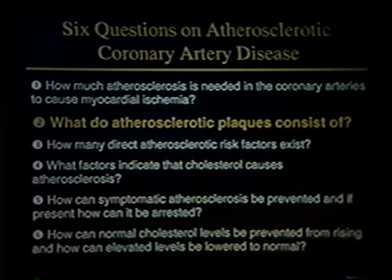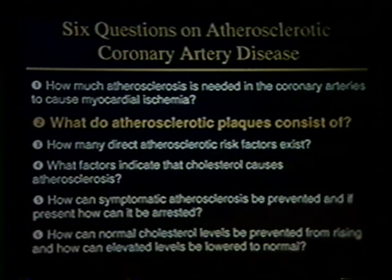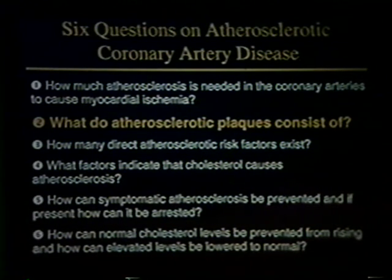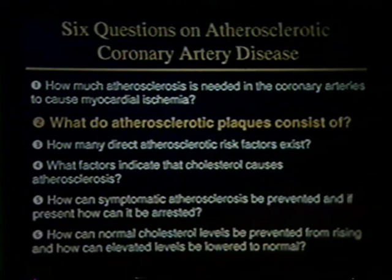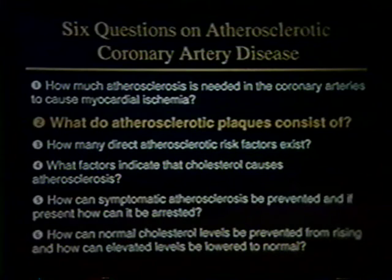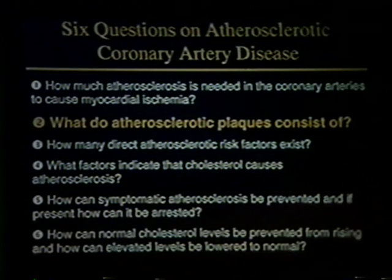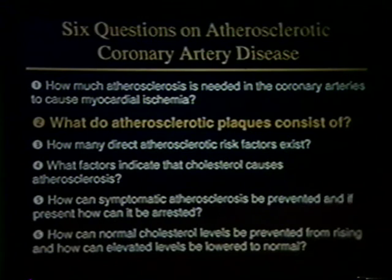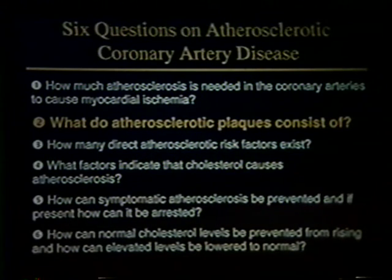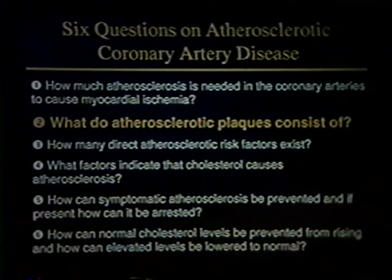Question two: what do these atherosclerotic plaques consist of? I'm talking about plaques in the 60-year-old man with fatal coronary disease or symptomatic myocardial ischemia. Incidentally, the average age of death in men from coronary disease — that means half of the men with coronary disease never reach age 60. I consider 60 a pretty young person. The average age of death in women is about 70, about a 10-year difference. So coronary disease affects relatively young people, and sudden death is primarily a problem of young men.